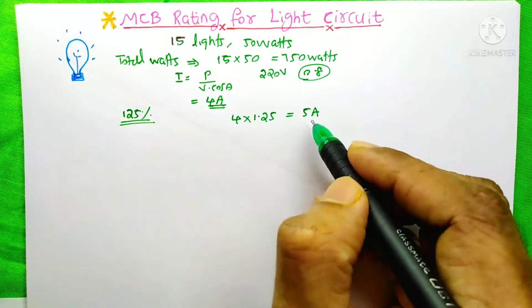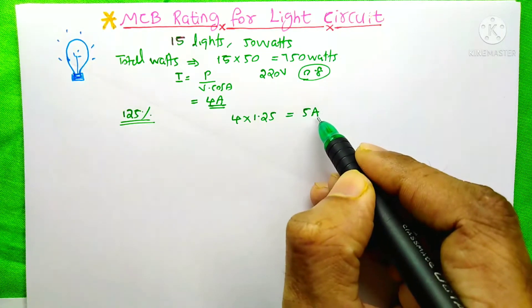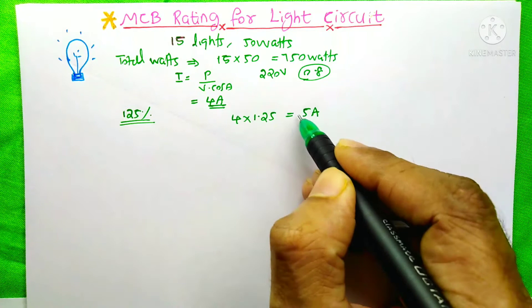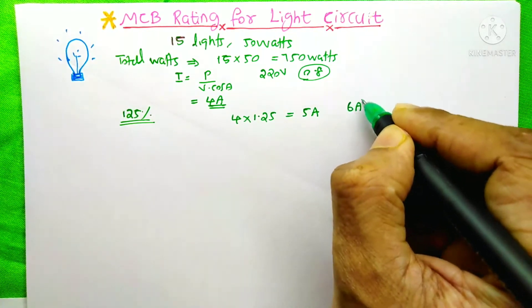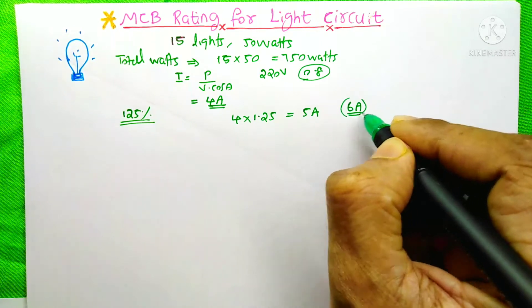We need to select an MCB of 5A, but in the market 5A will not be available, so you need to choose the next higher size. From the market, you need to choose the 6A rating.